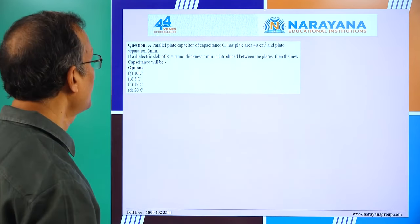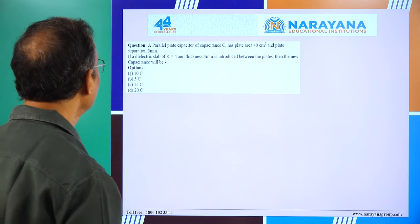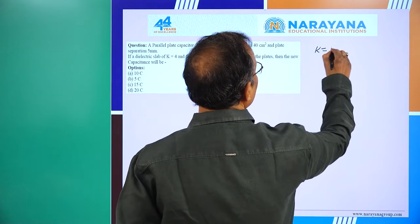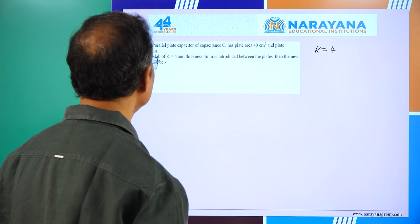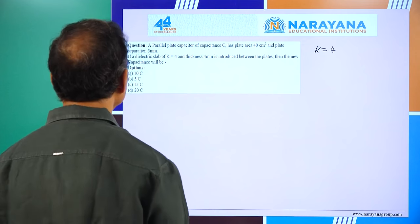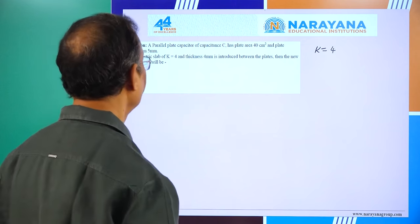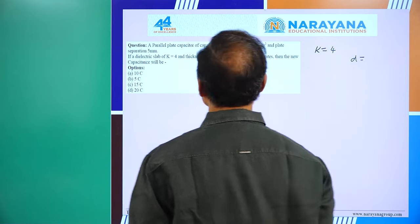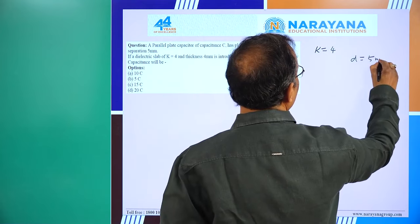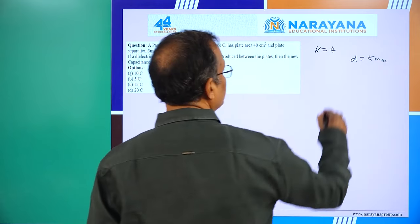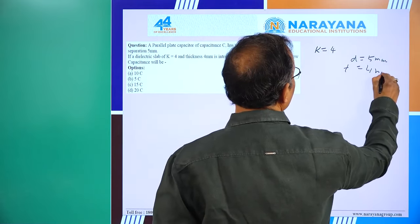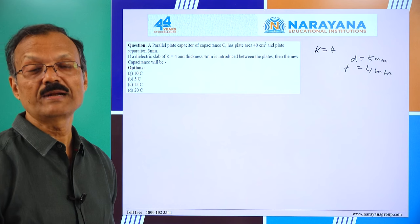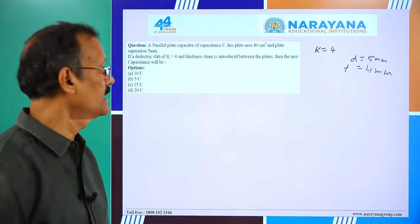Next question: a parallel plate capacitor has plate area 40 cm², plate separation 5 mm, dielectric constant K = 4, and dielectric thickness 4 mm introduced between the plates. Find the new capacitance. Using the formula: C' = ε₀A / (D - T + T/K), where D = 5 mm and T = 4 mm.